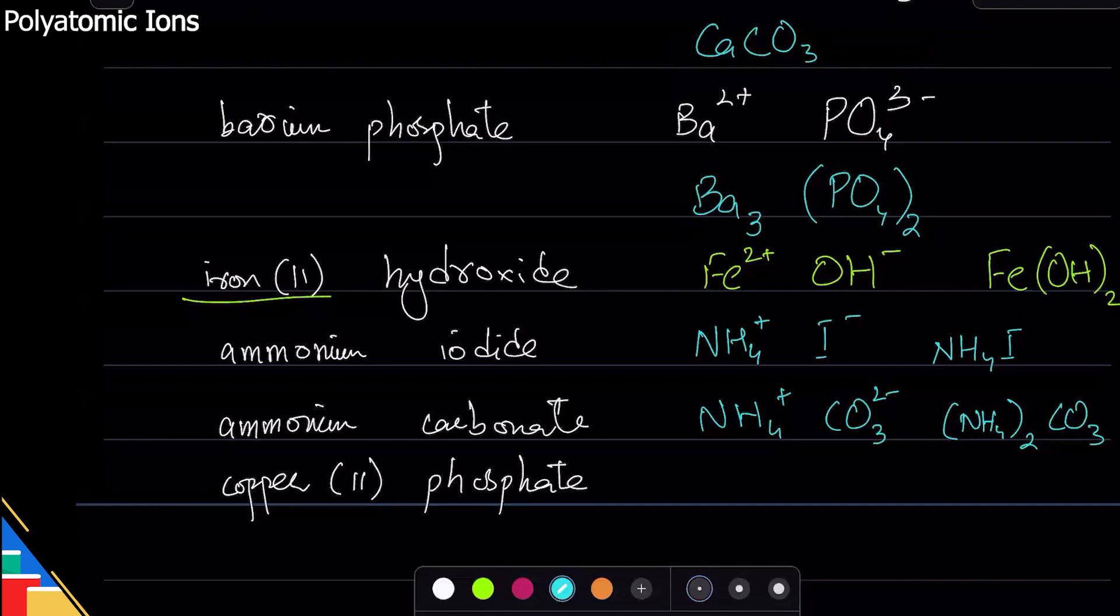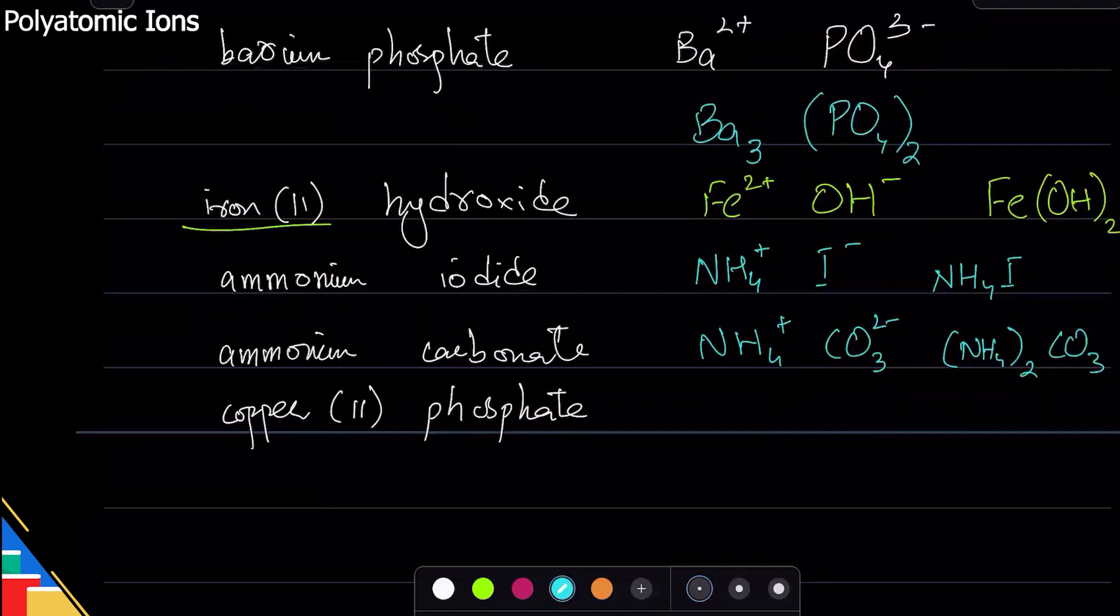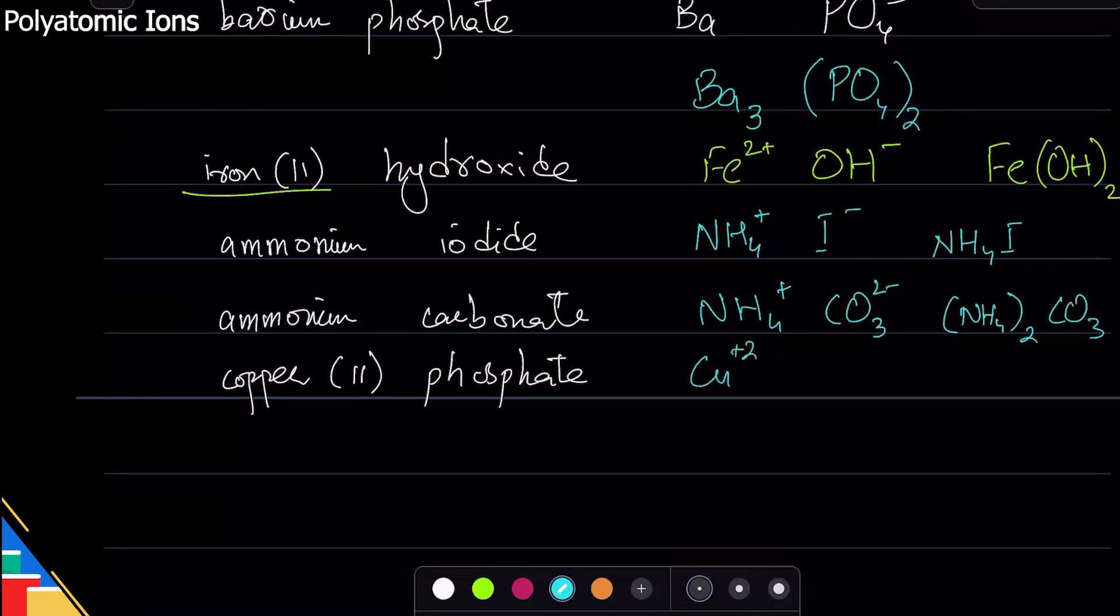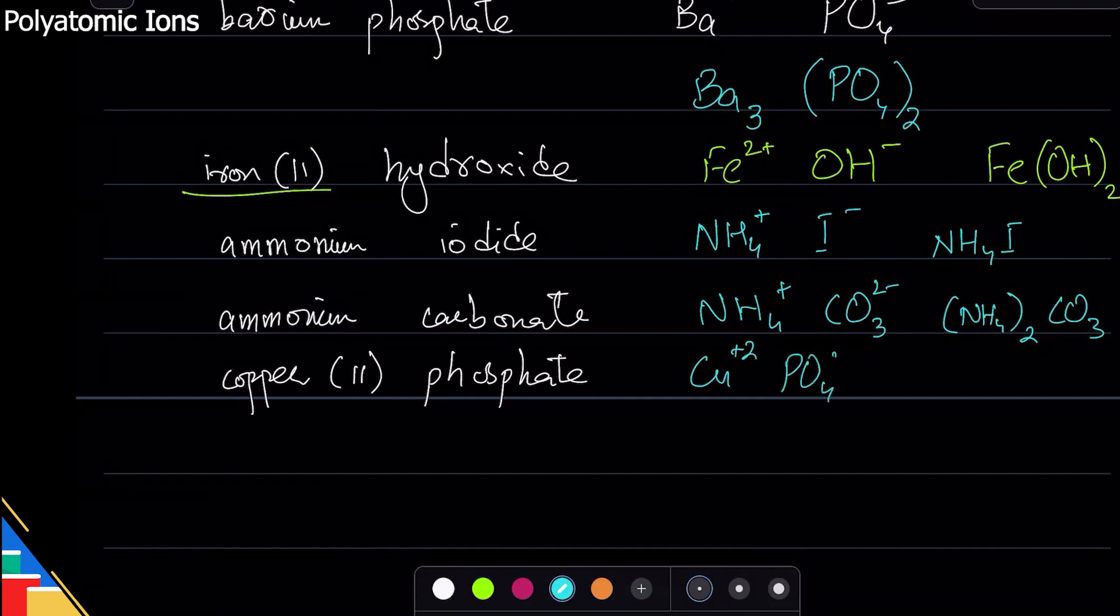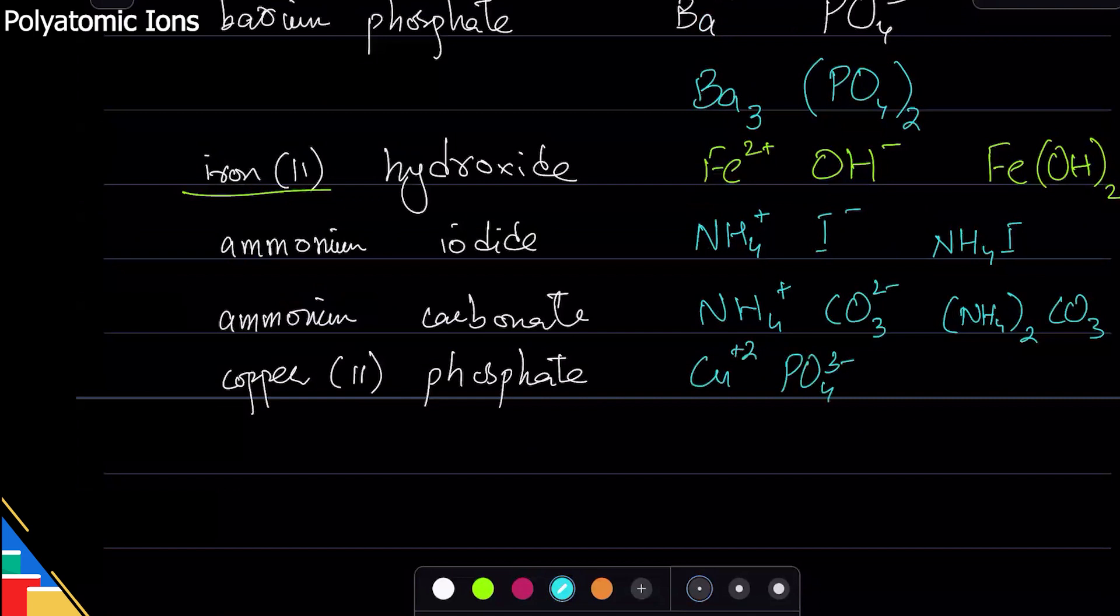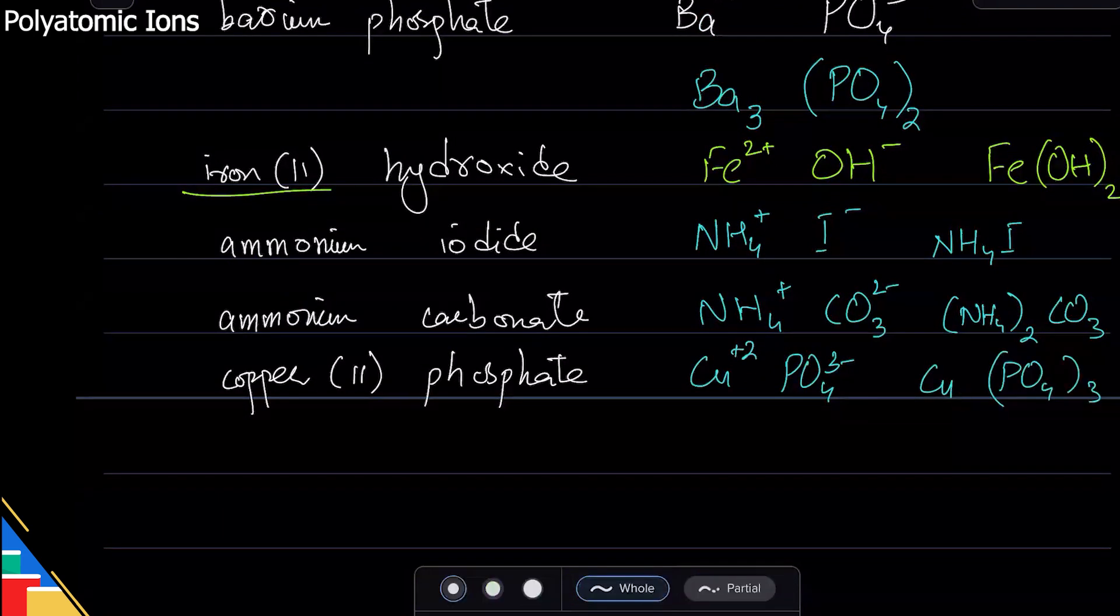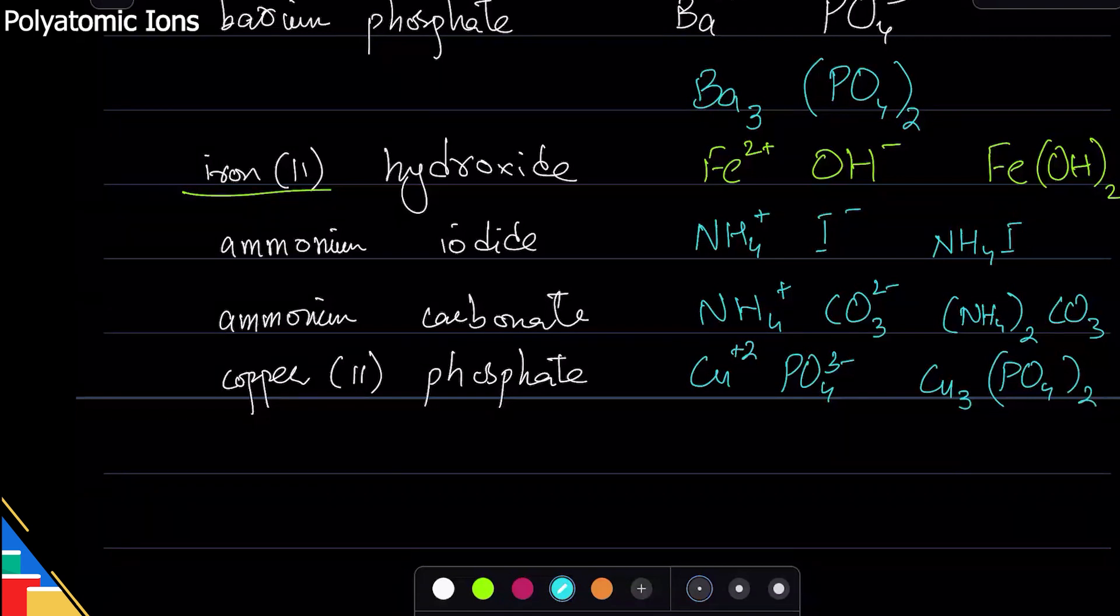Copper two phosphate. Copper plus two, phosphate PO4 negative three. So ratio flip - two goes here, three goes here. So Cu3(PO4)2. You're absolutely right. So this is how you name any compounds and write their formulas.